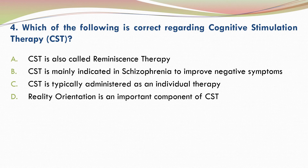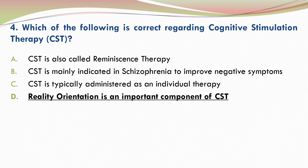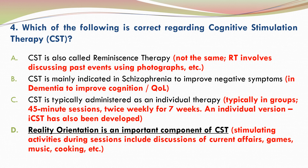The correct answer is D — reality orientation is an important component of cognitive stimulation therapy. A is incorrect because CST and reminiscence therapy are not the same. Reminiscence therapy involves discussing past events using prompts such as old photographs. B is incorrect because CST is mainly indicated in dementia, especially mild to moderate dementia, to try to improve cognition and quality of life.